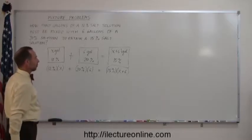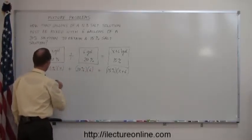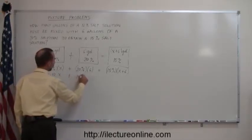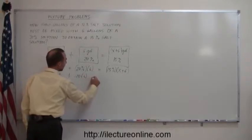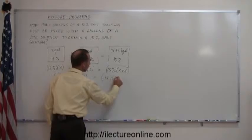Now we simply solve this algebraically. We turn the percents into decimals first, so this becomes 0.12X plus 0.20 times 6 equals 0.15 times (X plus 6).